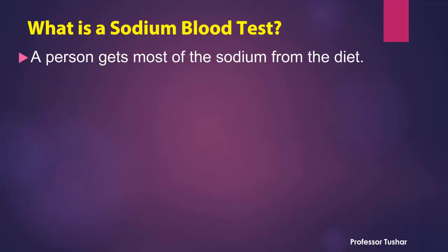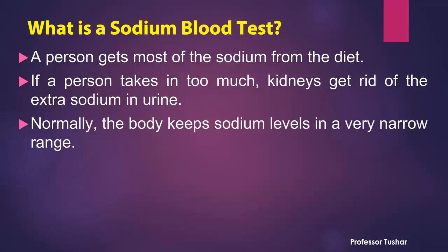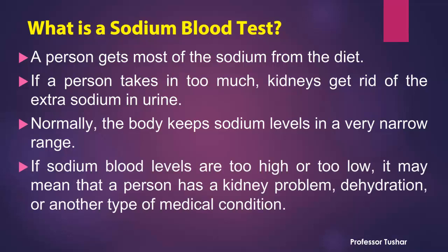A person gets most of the sodium from the diet. If a person takes in too much, the kidneys get rid of the extra sodium in urine. Normally, the body keeps sodium levels in a very narrow range. If sodium blood levels are too high or too low, it may mean that a person has a kidney problem, dehydration, or another type of medical condition.